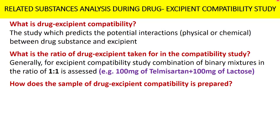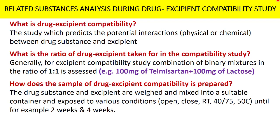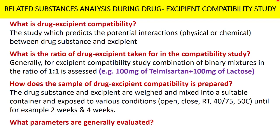The drug substance and excipient are weighed and mixed into a suitable container — most commonly amber or transparent glass vials. Those samples are kept at different conditions such as room temperature, 40°C/75% RH, or 50°C in open or closed conditions. The study typically runs up to four weeks, with sample withdrawals at two weeks and four weeks to evaluate critical attributes.